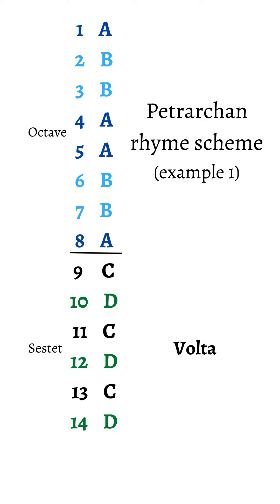This is the rhyme scheme of a Petrarchan sonnet. We've got those first eight lines, the octave. And again, the matching letters symbolize lines that rhyme with each other. So the first, fourth, fifth, and eighth lines will rhyme. And then the second, third, sixth, and seventh lines will rhyme.